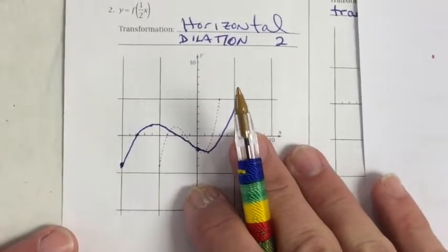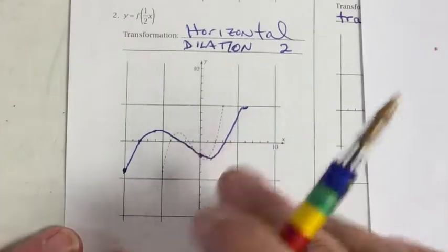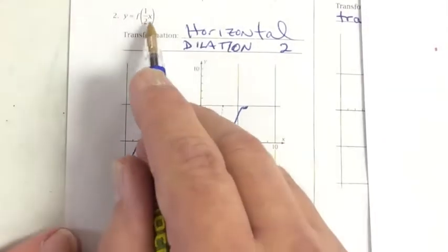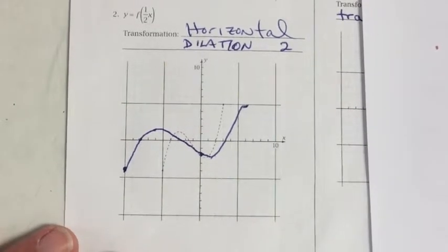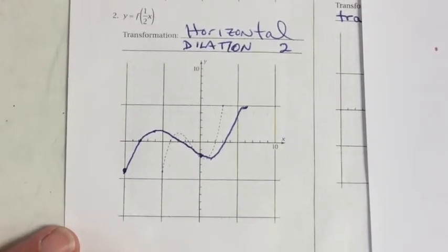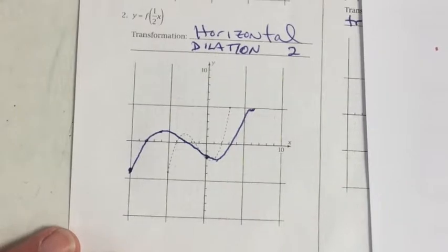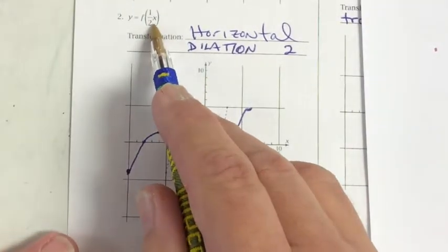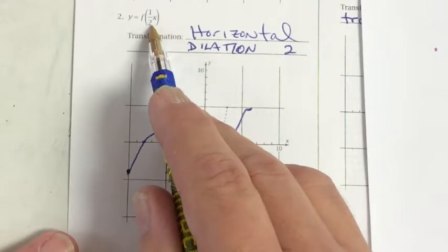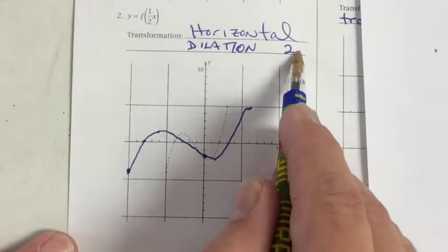In contrast, this is a horizontal dilation because it's an inside transformation. And on the inside, we don't take the numbers at face value. We take their inverse. In this case, it's the multiplicative inverse, which is the reciprocal. So this is a horizontal dilation with a factor of 2.